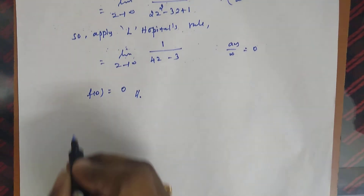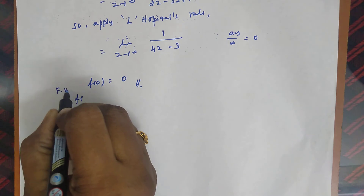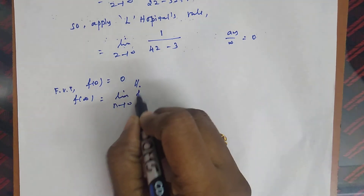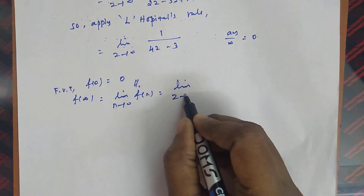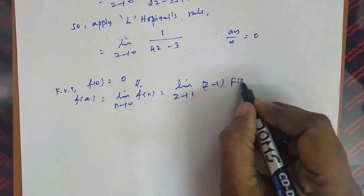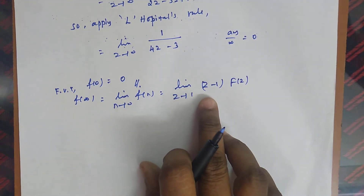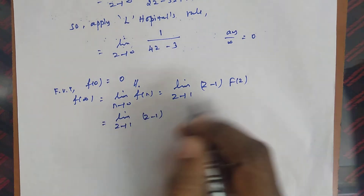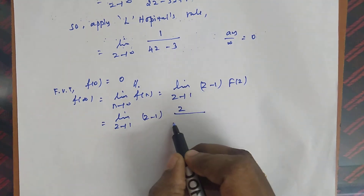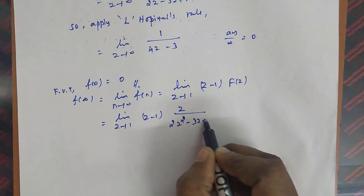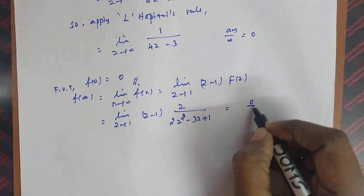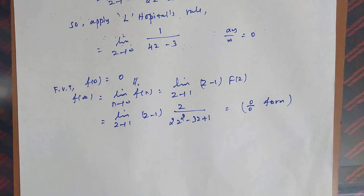Now for the final value of the second question: by the final value theorem, f(∞) equals limit z→1 of (z - 1)·F(z). Substituting the given F(z), we get limit z→1 of (z - 1)·z/(2z² - 3z + 1). When we apply z = 1, this gives a 0/0 indeterminate form, so we must apply L'Hôpital's rule again.